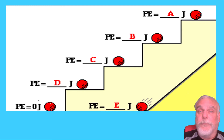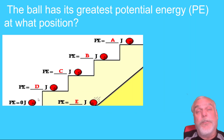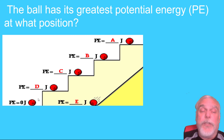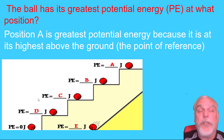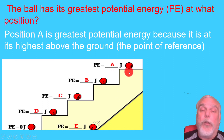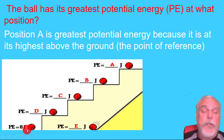Take a look at this chart. The ball has its greatest potential energy at which position — A, B, C, D, or E? The correct answer is position A, because it is highest above the ground — the ground being our point of reference. Ball A will fall the farthest, then B, then C, then D, and ball E will not go anywhere because it's already on the ground.